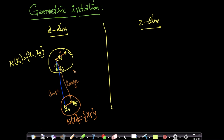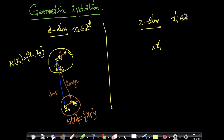So this is how my d-dimensional data is. What t-SNE tries to do is, for every point x1, x2, x3, x4, x5, it tries to embed this data into a low-dimensional space. This is very important: each xi belongs to R^d here, and each xi-dash belongs to R^2. I place x1-dash and try to preserve the neighborhood.